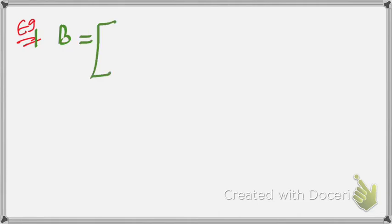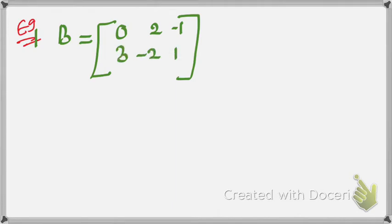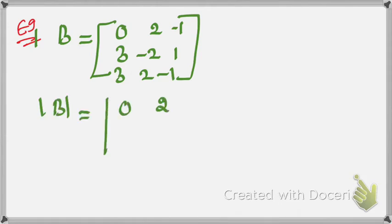Another example: B is a 3×3 matrix with entries [2, -2, 0; 2, -1, 3; -2, 1, 3] with the last row being 2, -1. Now, determinant of B equals the determinant of this 3×3 matrix. We take the expansion along the first row.